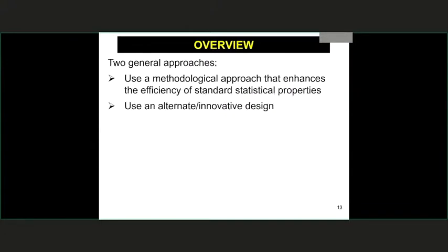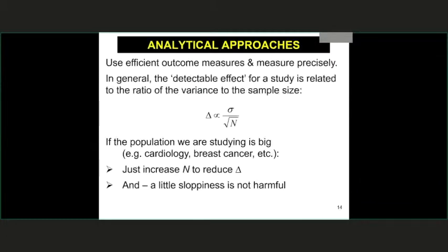There are two general approaches. One is to use analytical or methodological approaches that try to enhance the efficiency of standard statistical properties. The other is to use some type of specific or innovative design. The first is about being as efficient as we would normally be — there are situations where we can be sloppy and get away with it in a large confirmatory setting, but not in a small one.